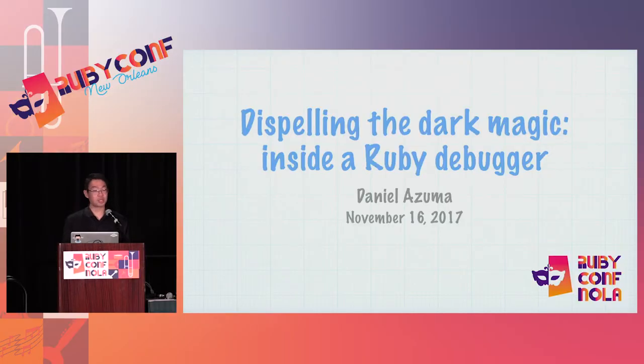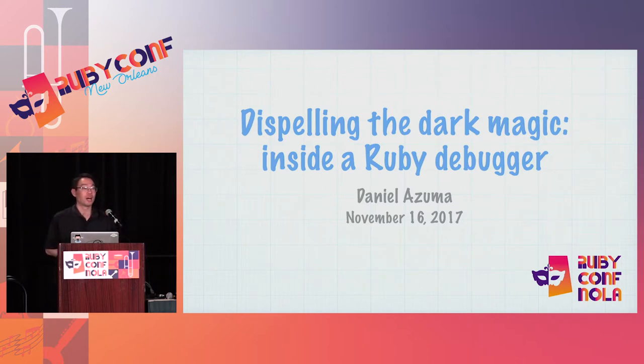This is 'Dispelling the Dark Magic Inside a Ruby Debugger.' My name is Daniel, and I watched the eclipse this summer.